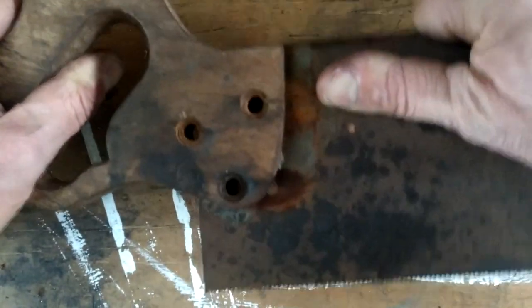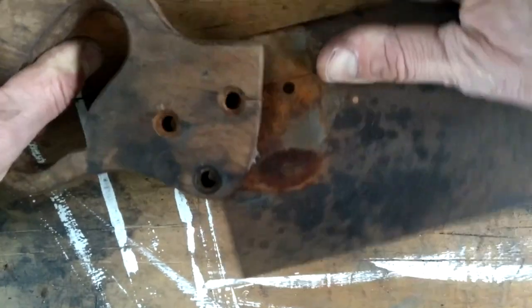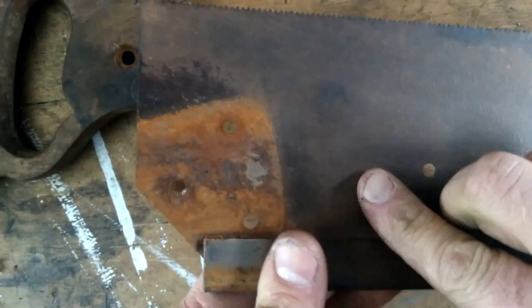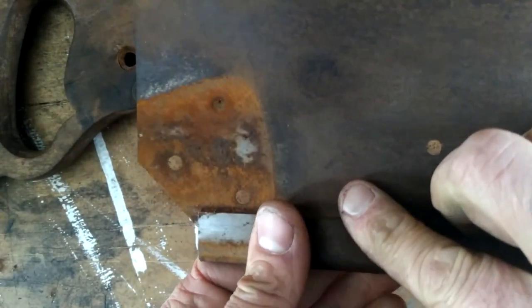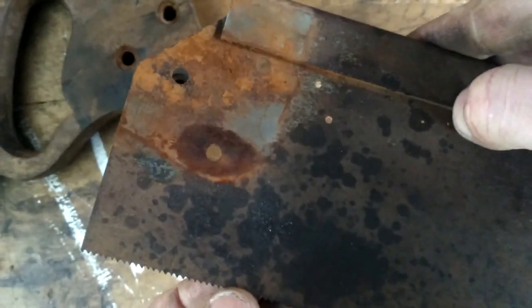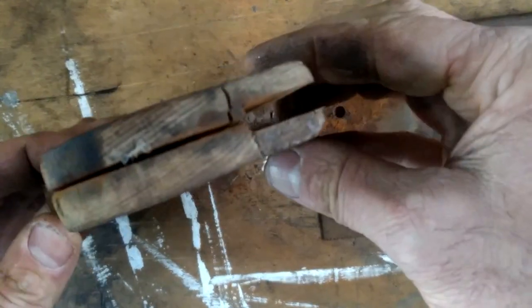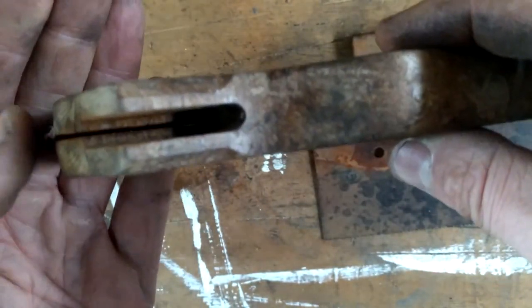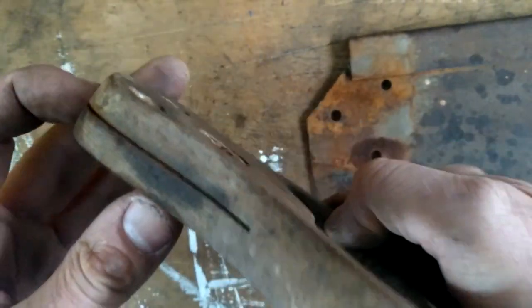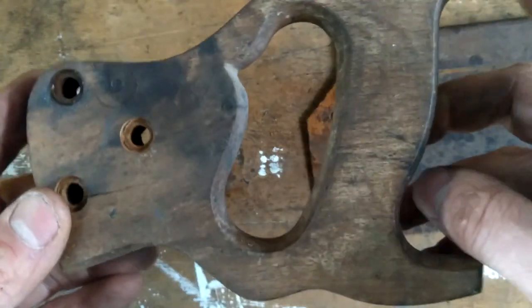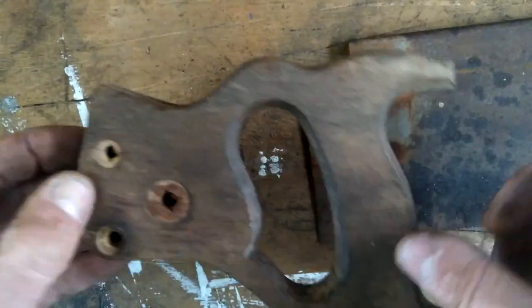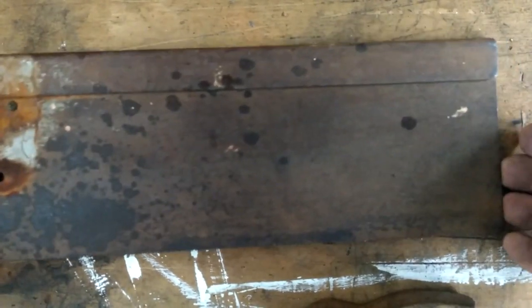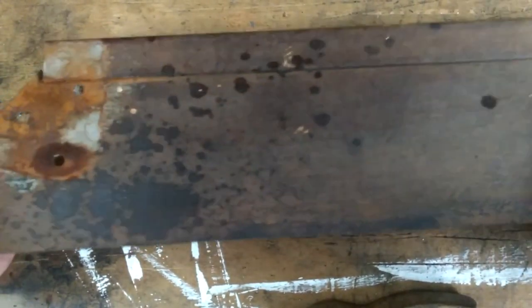You can see why the fasteners have been rusted in. Now we're going to put this in a little bucket of white vinegar with a bit of salt in there.